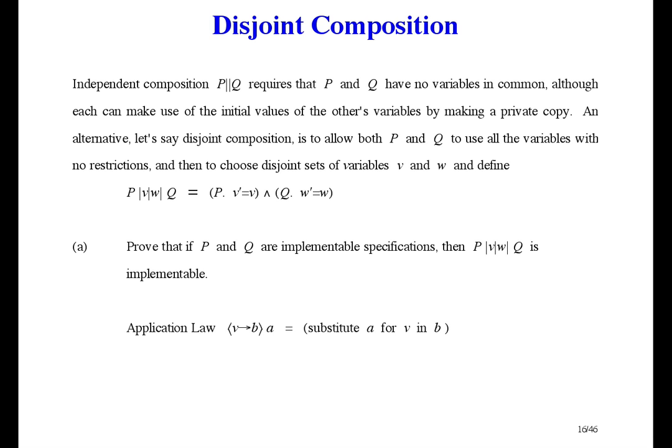The question says that variables V and variables W are disjoint with no variables in common. But it doesn't say that's all the variables. So, let me use X for the remaining variables, if there are any. Before I prove implementability, let me re-express disjoint composition.